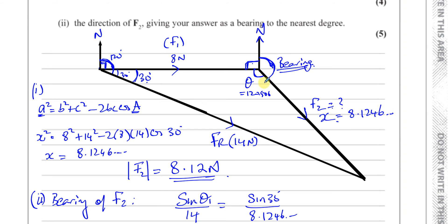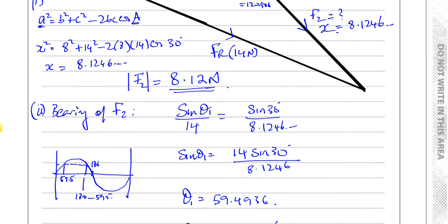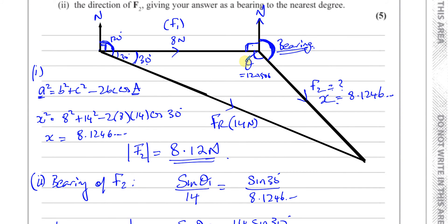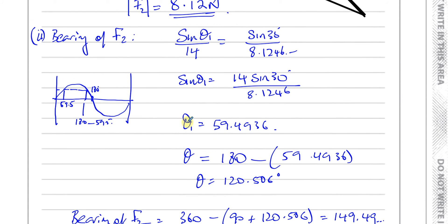And it makes sense looking at the diagram — the angle is obtuse. If we had used theta as 59.4 degrees, the bearing would have been a reflex angle, more than 180, which wouldn't make sense in context. So always think carefully when using the sine rule: is your angle going to be acute or obtuse? If you know it must be obtuse, whatever the calculator gives, you must do 180 minus that angle.